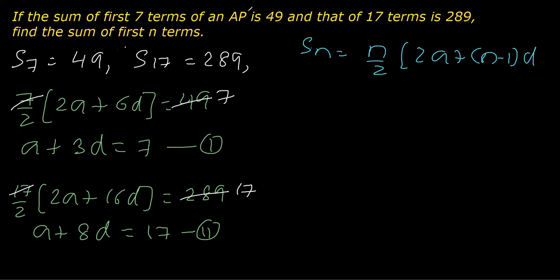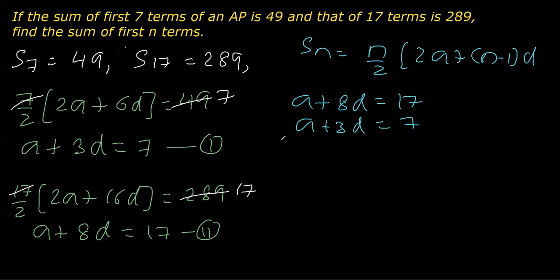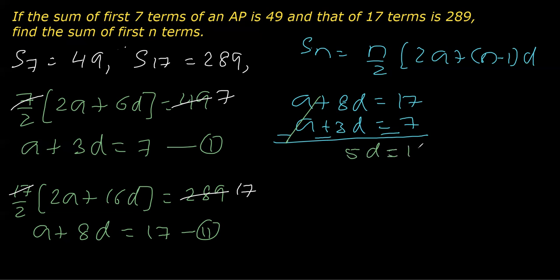Now I can simplify. We have the two linear equations in two variables. If I subtract these two equations, a gets cancelled. We get 8d minus 3d which is 5d equal to 10, because 17 minus 7 is 10. So we get d as 10 divided by 5, which is 2.